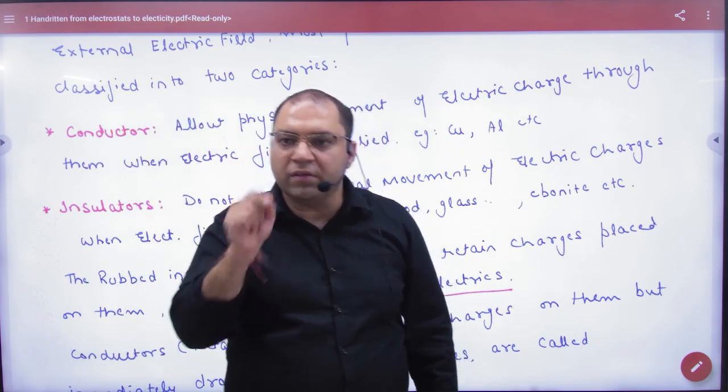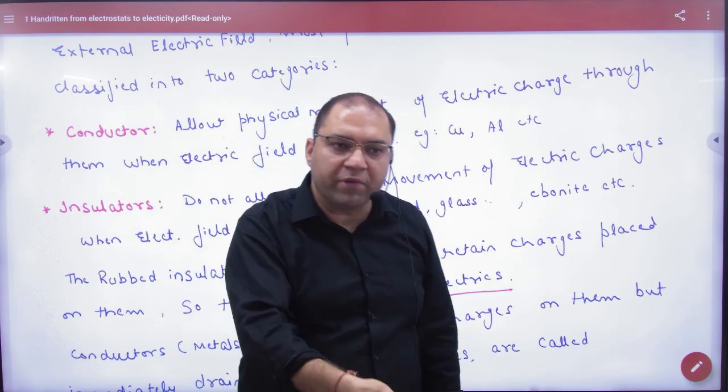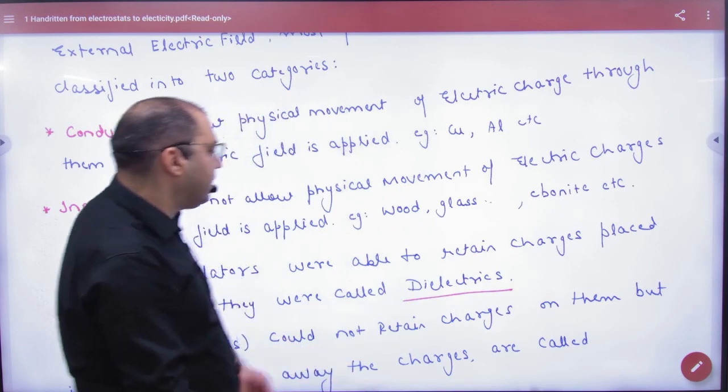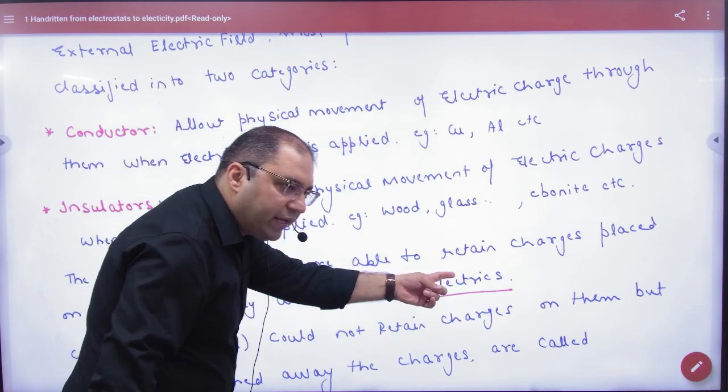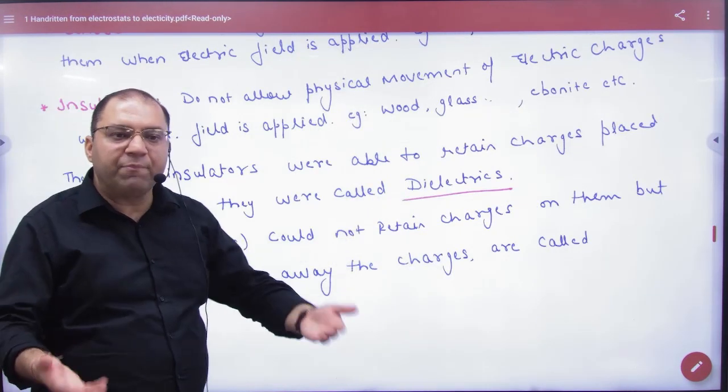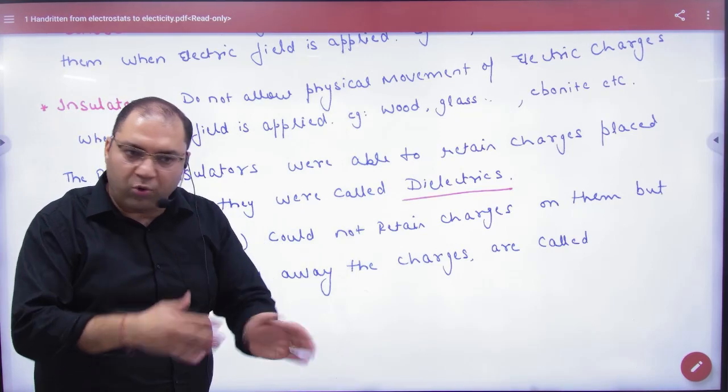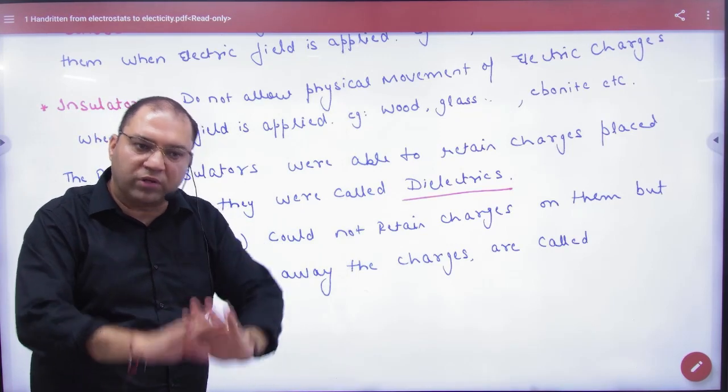So the insulators which don't conduct electricity but they can charge in the volume, what do they call? Dielectrics. So dielectric materials. They can store the charge in the inside. Flow is not allowed. They can store volume-wise. This is dielectric.